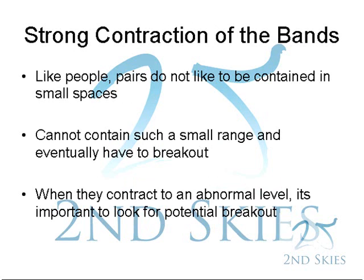Another strategy is to trade based on a strong contraction in the bands. Pairs do not like to be contained within very small spaces. As a pair gets caught in a very small range, that means there is generally low volume, and when large amounts of capital come in, they overwhelm one side and have pretty much free reign to push the pair in one particular direction. Since pairs cannot contain these small ranges for long periods of time, a breakout is eventually going to happen. When bands contract to a very abnormal level, we should be cuing into that, expecting a breakout to happen soon, and looking to potentially trade that breakout.